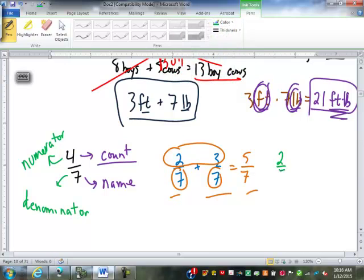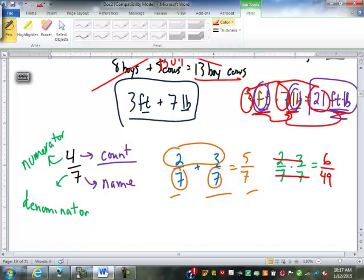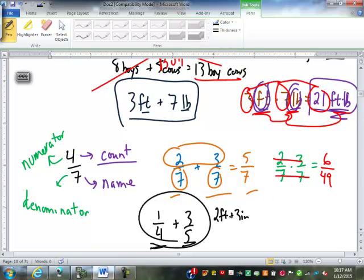When you multiply two sevenths times three sevenths, teacher told you to just multiply straight across, right? Two times three is six, seven times seven is 49. That's not a special rule for fractions. When we multiply any numbers, we combine the counts, then we also combine the names. If I have one-fourth plus three-fifths, can I add those the way they're written? No, they have different names. When we multiply, however, do we need the same name? No, so we can just go ahead and multiply. Combining the counts, one times three is three, and also combining the names, four times five is 20.